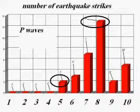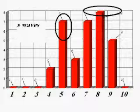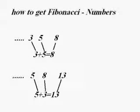So I found the numbers of the strikes and found out that 5 strikes and 8 strikes happen more often than other strikes. The Fibonacci numbers after the 5 following the 8. Maybe it's got something to do with earthquakes.